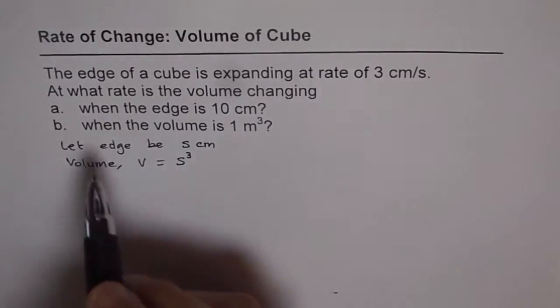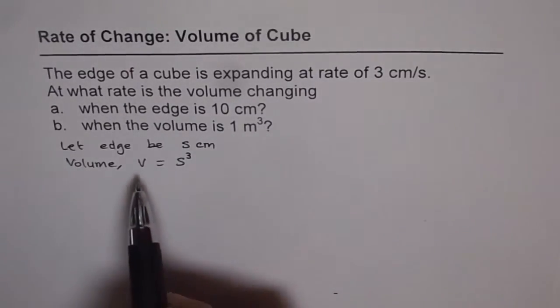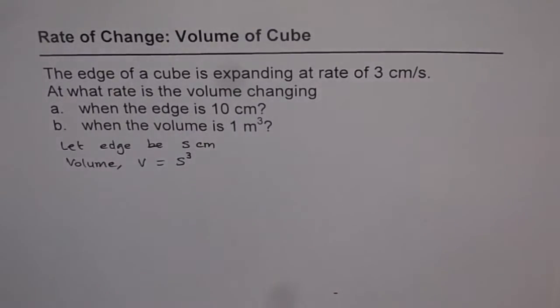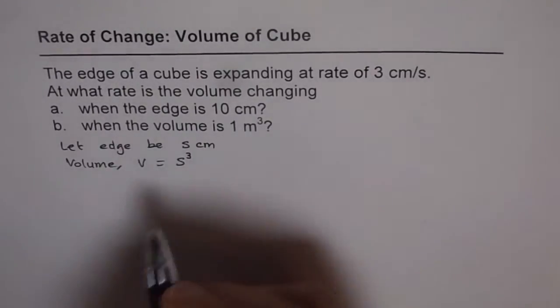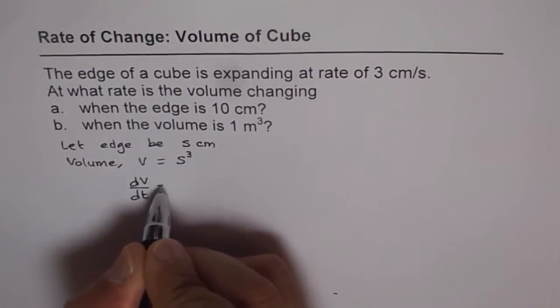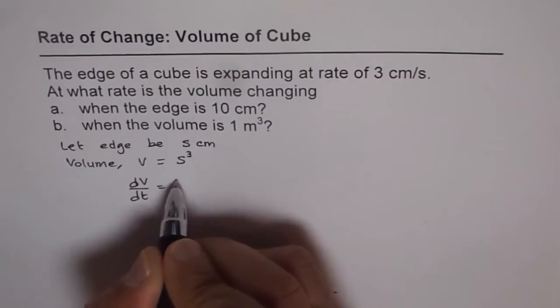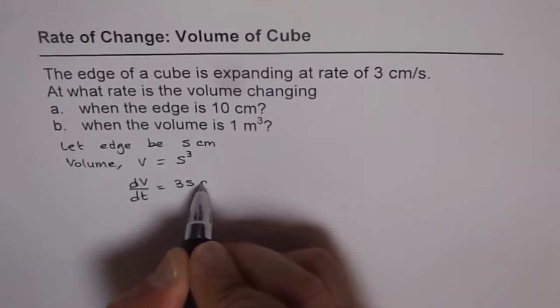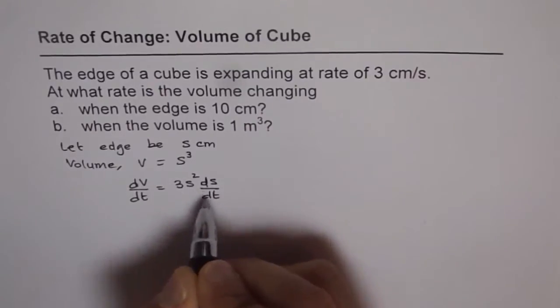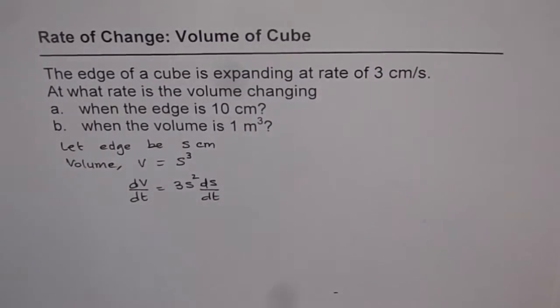Now we want to find rate of change of volume. Both the quantities are related and that's why we have related rates. So dv/dt gives us the rate of change of volume with respect to time. When we differentiate this, we get 3s² ds/dt. So that is the relation which connects volume with the edge rate of change.